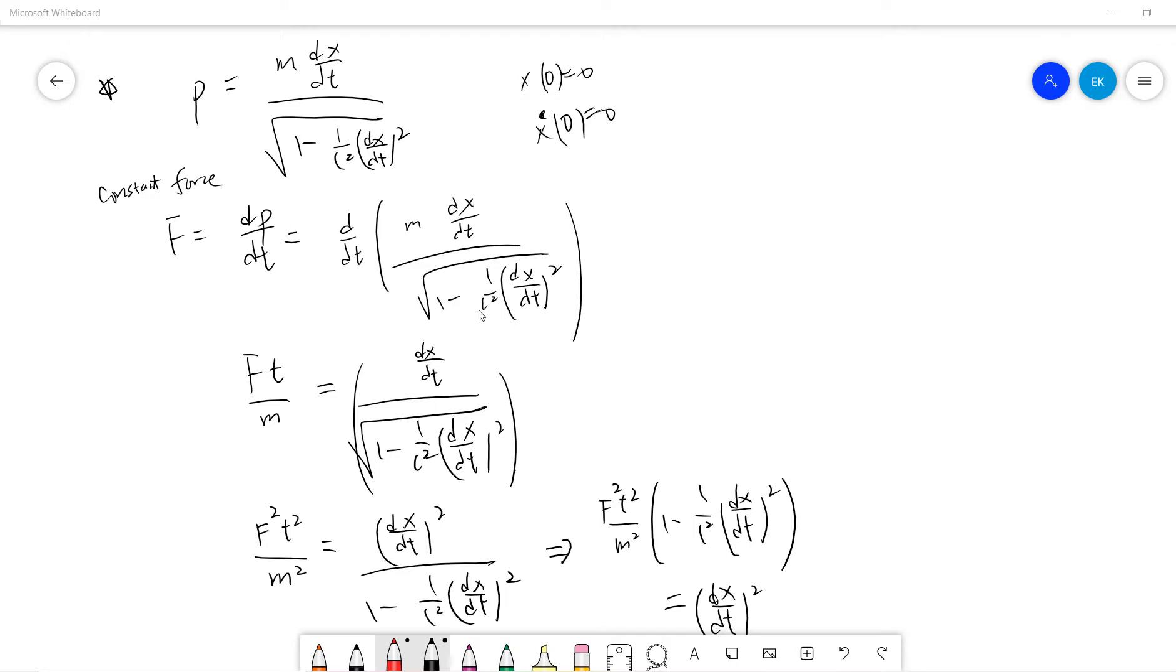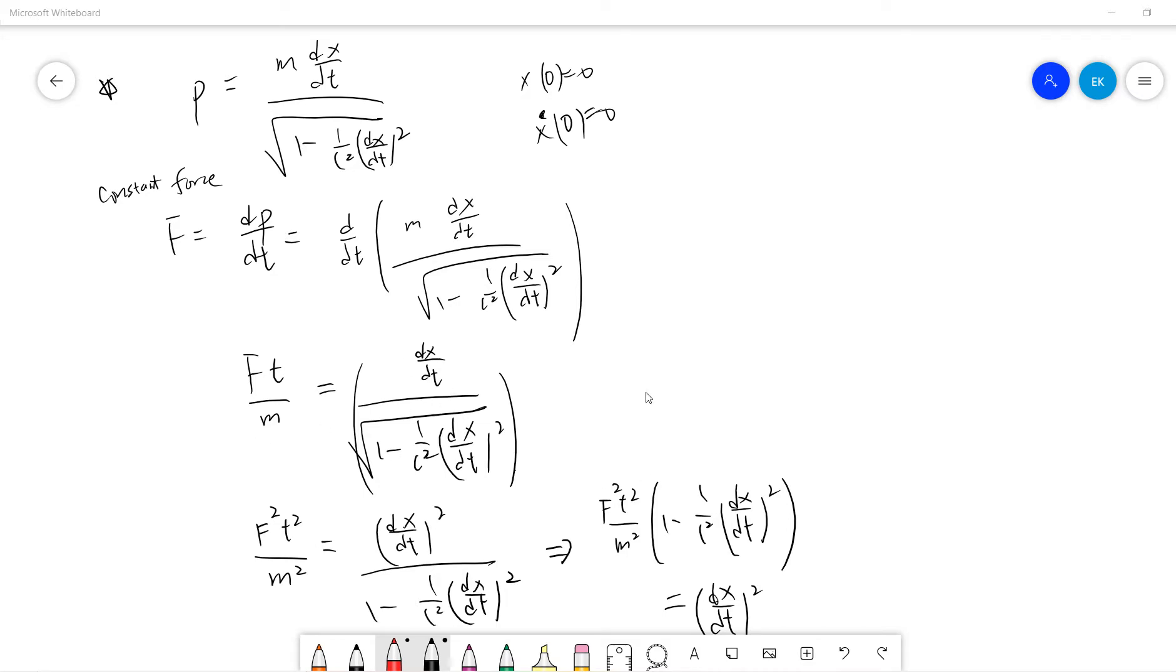But now in special relativity, somehow there is a constant speed c. So your dp/dt, you just need to write the derivative of this, right? So if f is constant, then you just integrate t. So you get ft/m equals dx/dt divided by this.